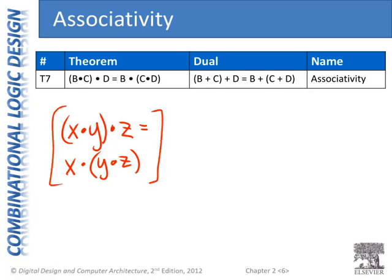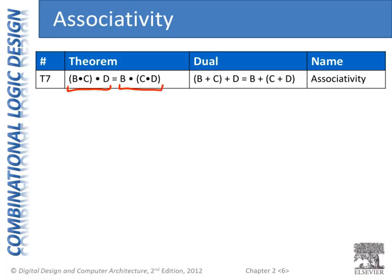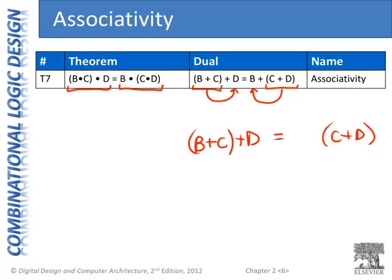This is the reason we've used these operators — we've adopted them for the AND operation because they have similar properties. Across an AND operation, I can associate the variables in any way I'd like. Same thing with its dual: across an OR operation, I can perform B OR C and then OR that result with D — the same as adding B plus C first or C plus D first, then adding the remaining term.